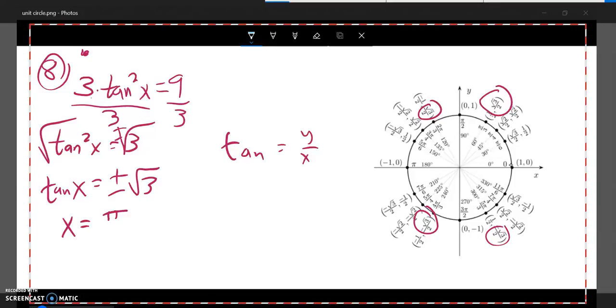x must equal pi over 3, 2 pi over 3, 4 pi over 3, and 5 pi over 3. There they are.